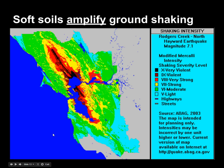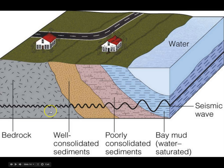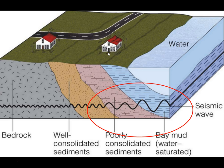Let's look at some effects. Ground shaking and failure of buildings. An important point: soft soils amplify ground shaking. The softer, less consolidated soil you have, the more shaking you're going to experience. This is San Francisco. The soil here is soft, so it amplifies the shaking, and you can see the Modified Mercalli Scale ratings reflect that. Bedrock is not going to amplify, but as you get out to poorly consolidated sediments and water-saturated mud, the seismic wave amplitude increases and you'll have more damage in those locations.